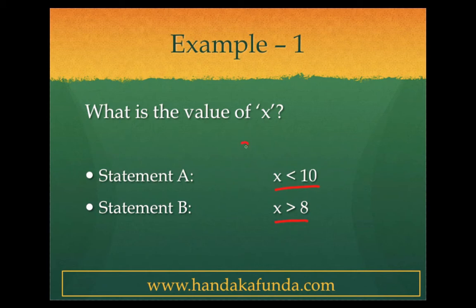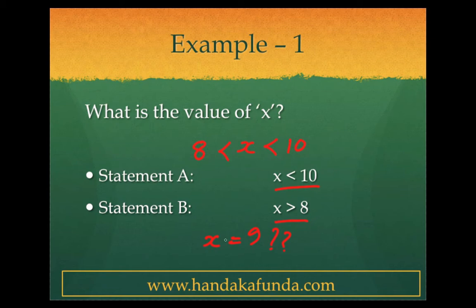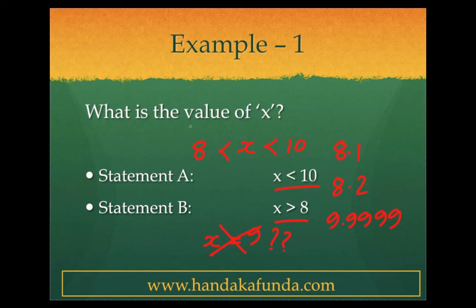But if you combine these two statements, you get x as something between 8 and 10. Does that mean x is equal to 9? Well, if you are thinking x is equal to 9 is the answer, you are wrong. Nowhere does it say that x has to be a natural number or an integer. x could very well be 8.1, it could be 8.2, it could be 9.9999. Finding out an answer means you should be able to determine a unique answer. Can you get a unique answer here? No, you can't. And that is the reason why you cannot solve it this way.